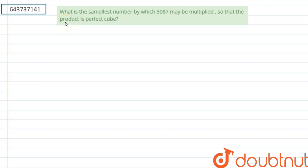Hello everyone. The question is: what is the smallest number by which 3087 may be multiplied so that the product is a perfect cube? First, we will factorize 3087.